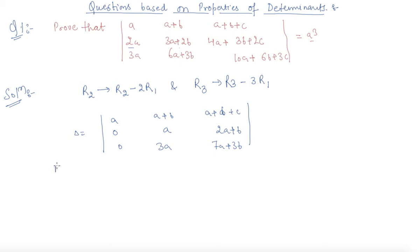Now again I will apply one more operation which is R3 goes to R3 minus 3 times R2, so this element will also become 0. We have: a, 2a, a+b+c; 0, a, 2a+b; and the third row becomes: 0, 0, a.